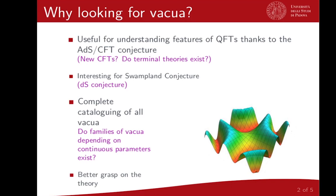Studying the scalar potential and its vacua in the gravity sector will give us information about the operator content of the boundary theory. In addition, the masses of the scalars will tell us about the anomalous dimensions of the operators in the boundary CFTs, so we could, using the Anti-de Sitter conformal field theory conjecture, analyze the existence of terminal theories as well.